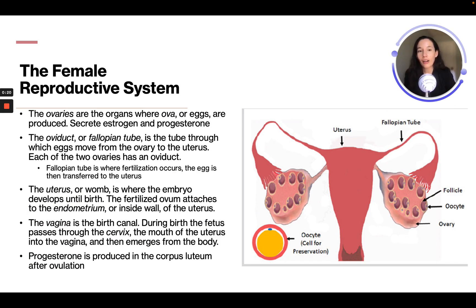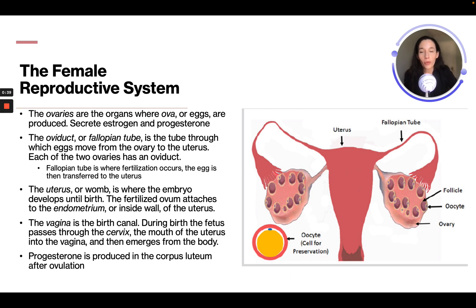This is an image of the female reproductive system. It consists of ovaries, which are the organs where ova or eggs are produced, and it secretes estrogen and progesterone. The oviduct or fallopian tube is the tube through which the eggs move from the ovary to the uterus. Each of the two ovaries has an oviduct, and the fallopian tube is where fertilization occurs.